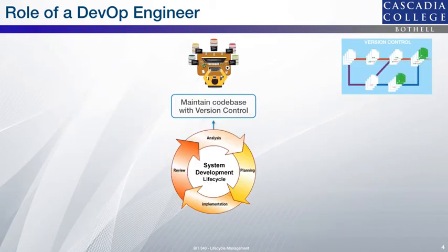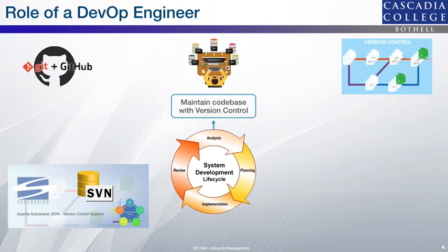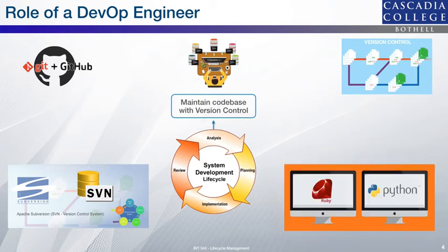Let's start with version control and the skill set to maintain a code base with version control. You must be using version control like Git or Subversion, so you need expert knowledge on how to use source code management tools. For example, if your group writes scripts in Python or Ruby, all such code has to be included in your source code management and managed together at one place.